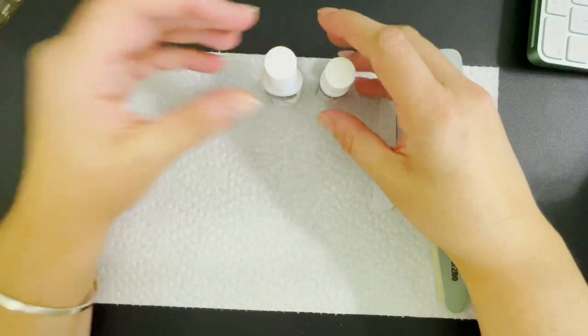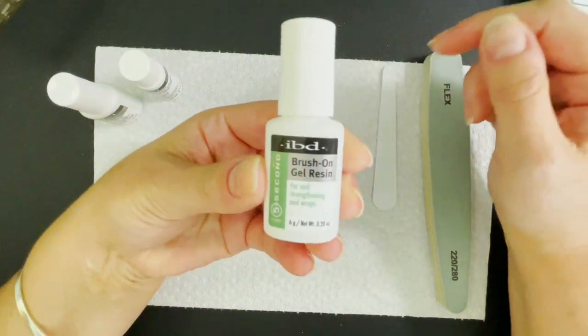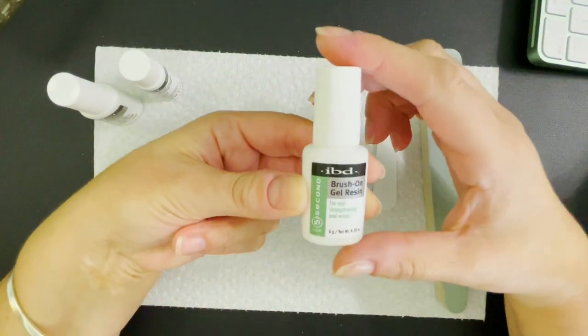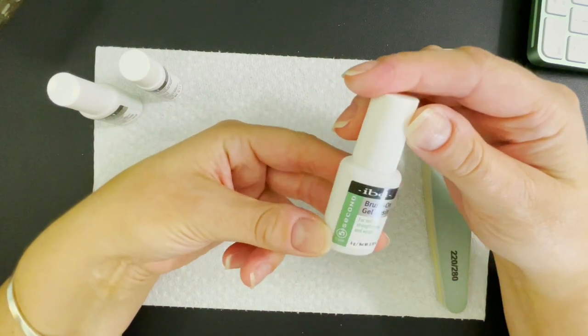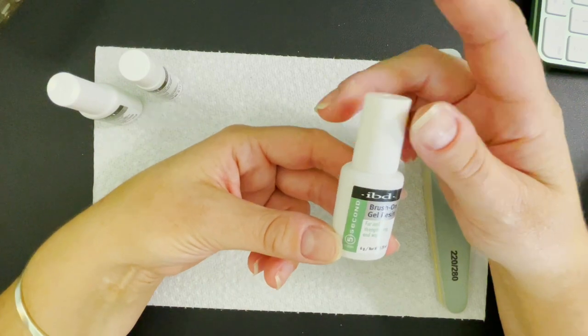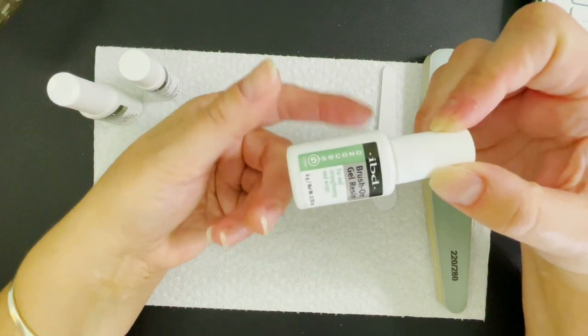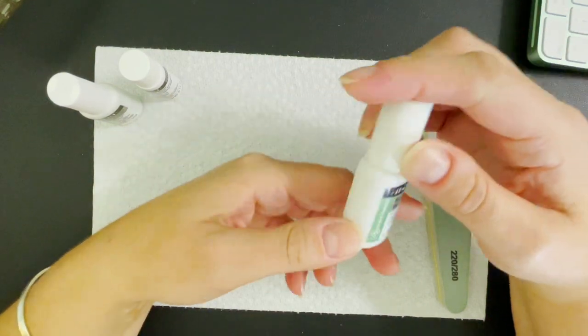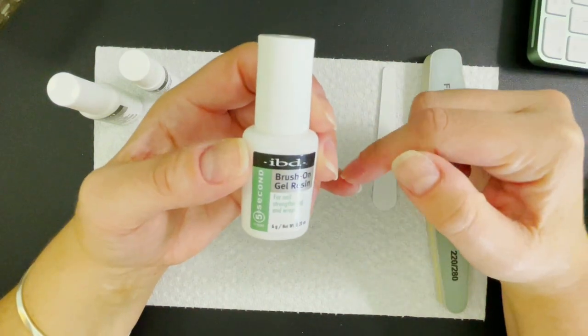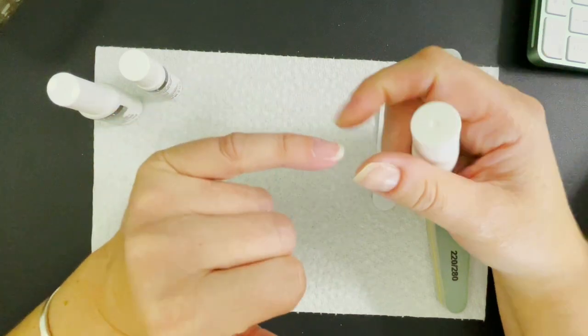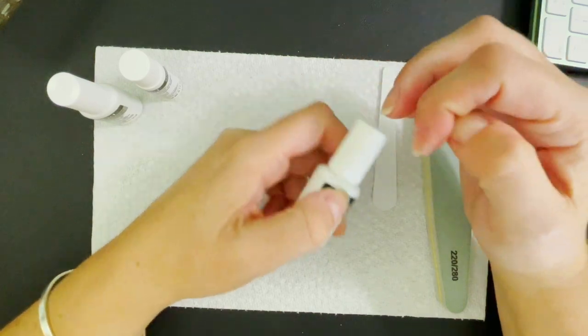Let me show you the product that I just used that did not seal my crack properly. I used the IBD Brush-On Gel Resin. This got very high reviews on both the IBD website and on Amazon. I find that this does not dry very quickly. It says five seconds, but it takes quite a few minutes to dry and for me it did not seal this crack that I'm about to show you. So I just soaked it off with acetone for about five minutes and now we're going to fix my nail again.